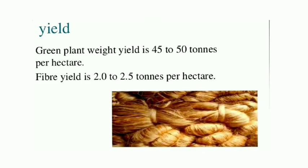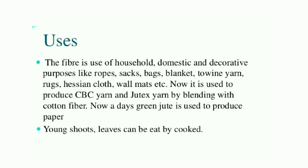Regarding yield, the green plant weight yield is 45 to 50 tons per hectare, but the fiber yield is only 2 to 2.5 tons per hectare — the rest is waste material. Applications include household and decorative purposes such as ropes, sacks, bags, blankets, twine, yarn, rugs, hessian cloth, and wall mats. Jute is also blended with cotton to produce CBC yarn and Jutex yarn. Green jute is used to produce paper, and young shoots can be eaten as a vegetable.